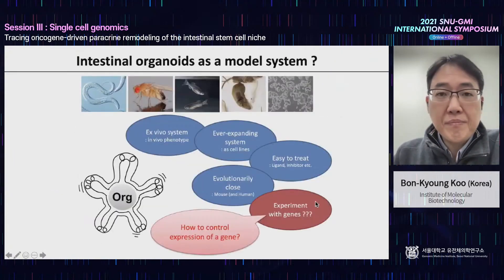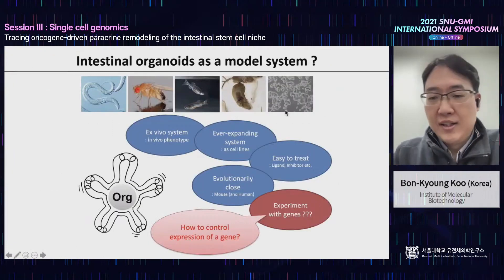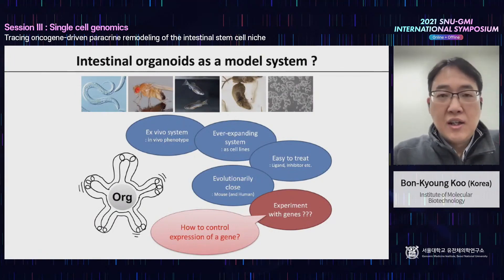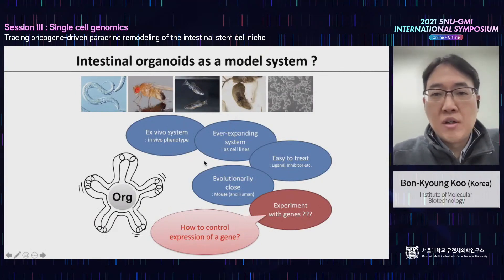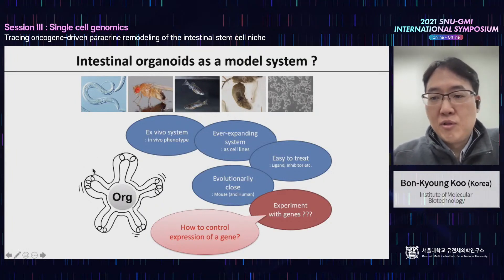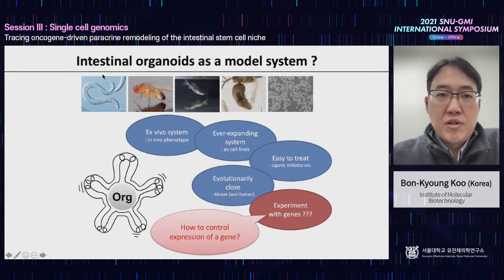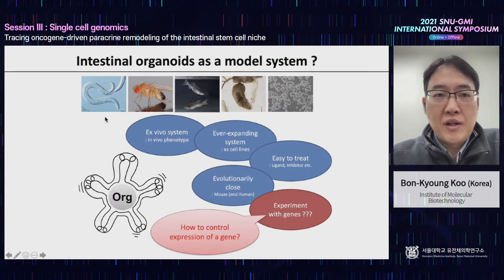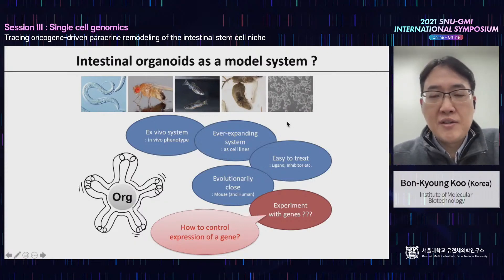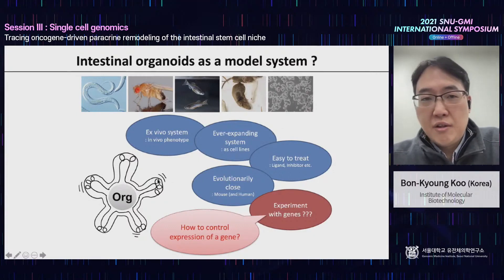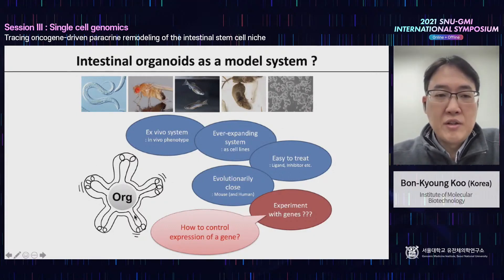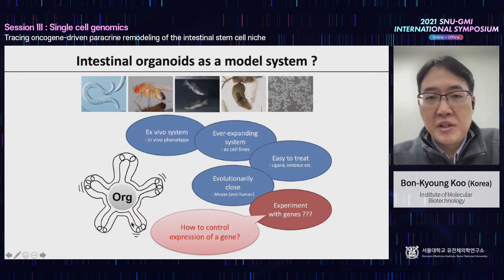In the Korean biology community I'm known as someone working on organoids. This slide shows why we can utilize intestinal organoids as a model system even though we have invertebrate models and cancer cell lines. The short answer is that the organoid system comes with very little genetic mutations because they have an intact genome, and they work as an in vitro system where you can observe in vivo phenotype.